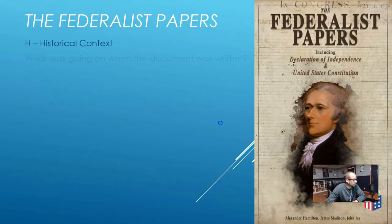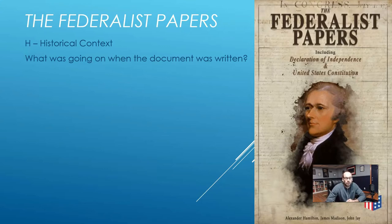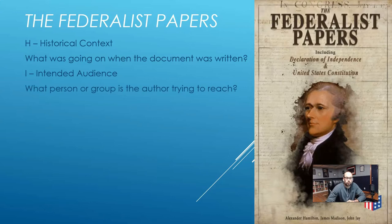Historical context basically means what was going on when the document was written. Context is important because some of the things we read might be from a long time ago, so if we know what's going on in America or in the world at the time, the document will make a lot more sense. The I is the intended audience — what person or group is the author trying to reach? Is there a particular political party or class of people they're trying to reach?